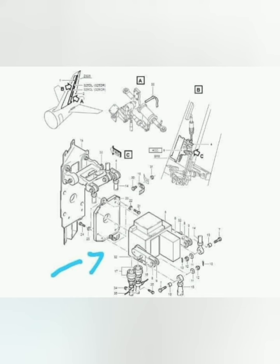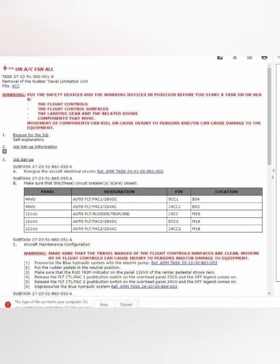This is the Rudder Travel Limitation Unit. You can see in the picture it has two electrical connectors, tooling rods, tab washers, nuts, and bolts. For removal and replacement, this is the AMM reference, and the fin number is 4CC.